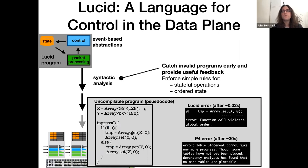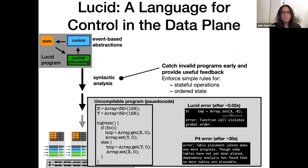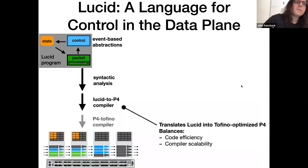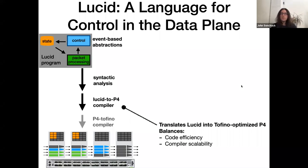This design basically lets Lucid give users better feedback and also reduces the amount of edge cases that the compiler backend has to worry about. Going back to one of the examples from before — if we wrote that in Lucid, it would fail at the syntactic analysis phase and Lucid would give us an error message that tells us exactly what went wrong and which line of code caused the problem. The third part of Lucid that's interesting is its optimizing compiler, which is a translation layer that converts Lucid into P4 optimized for the Tofino.